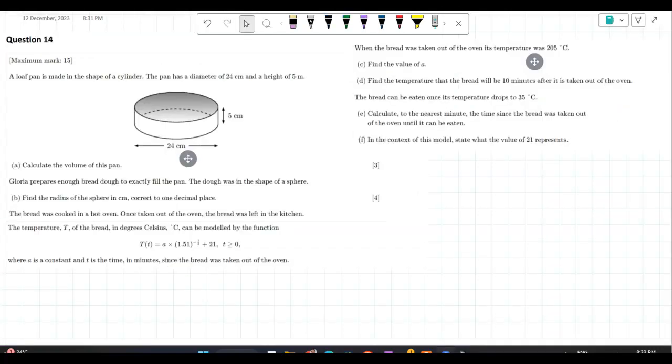I'll just finish it. Calculate the volume of this pan. Now it's a cylinder. What is the formula of volume of the cylinder? Volume is equal to pi r squared h. So pi into 12 squared into 5. You put this on your calculator, you'll get the volume. Part B. I'm not writing the answer. I'll just show you the method. Gloria prepares enough dough to exactly fill the pan. I need the answer for this actually because then we have to use it for the next part. Shape of a sphere.